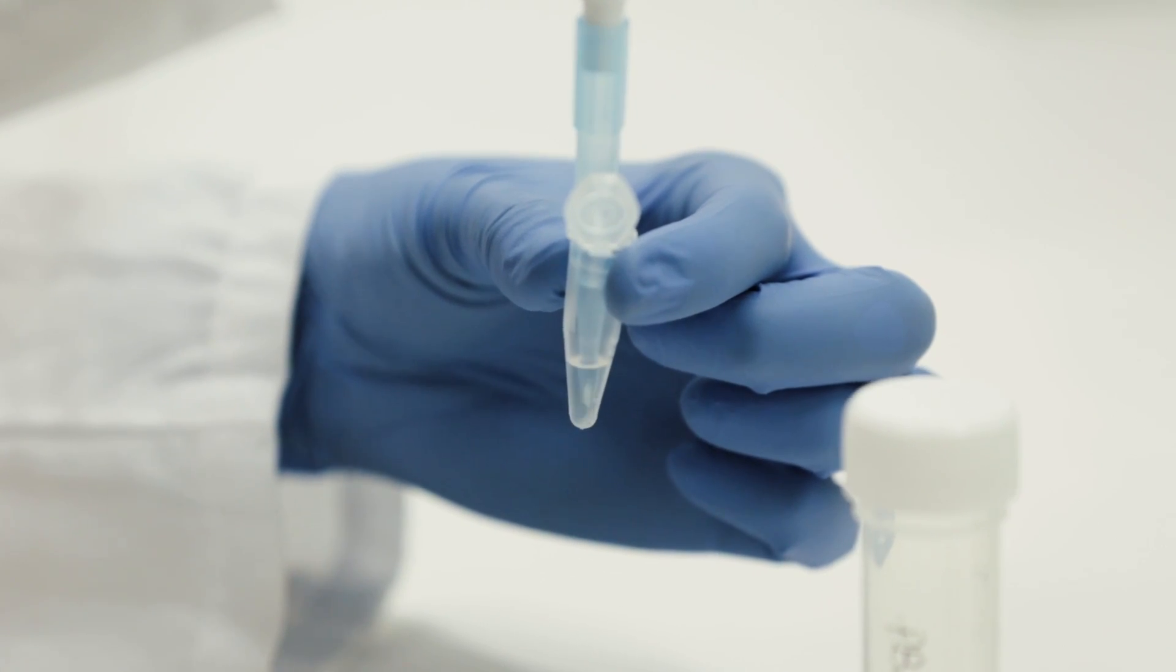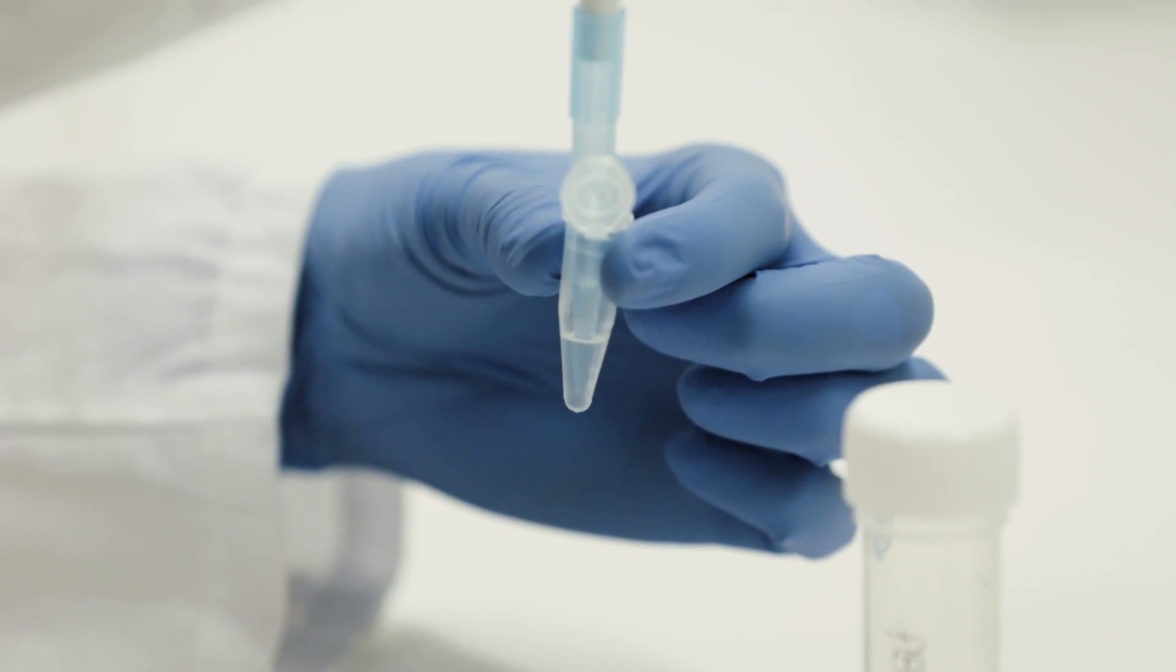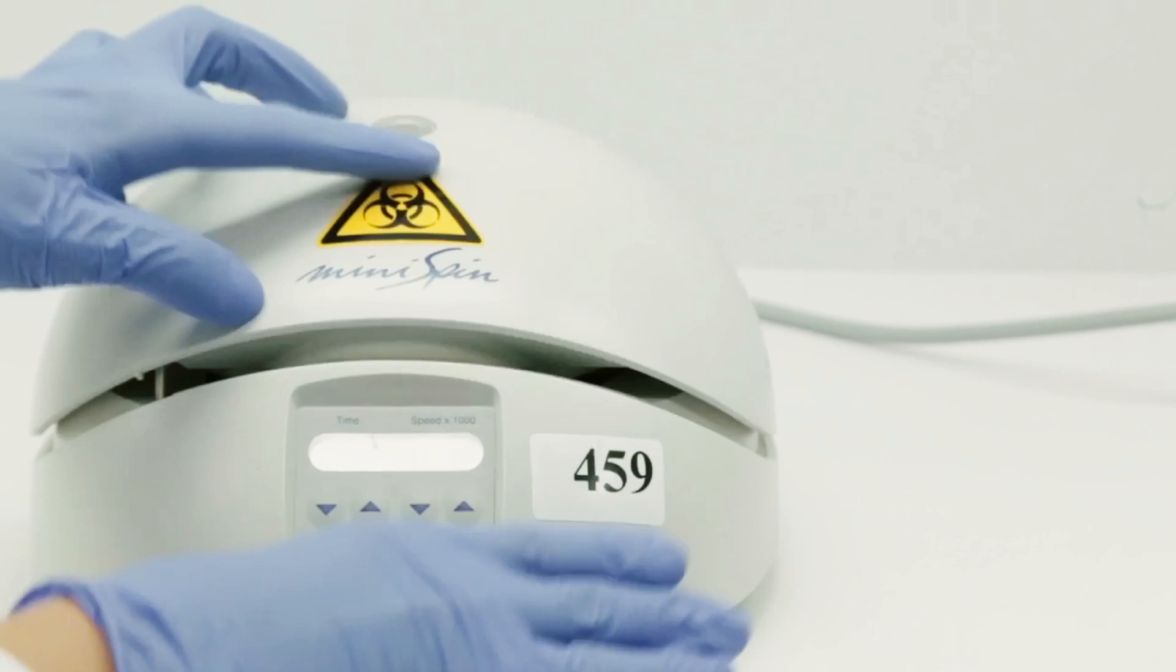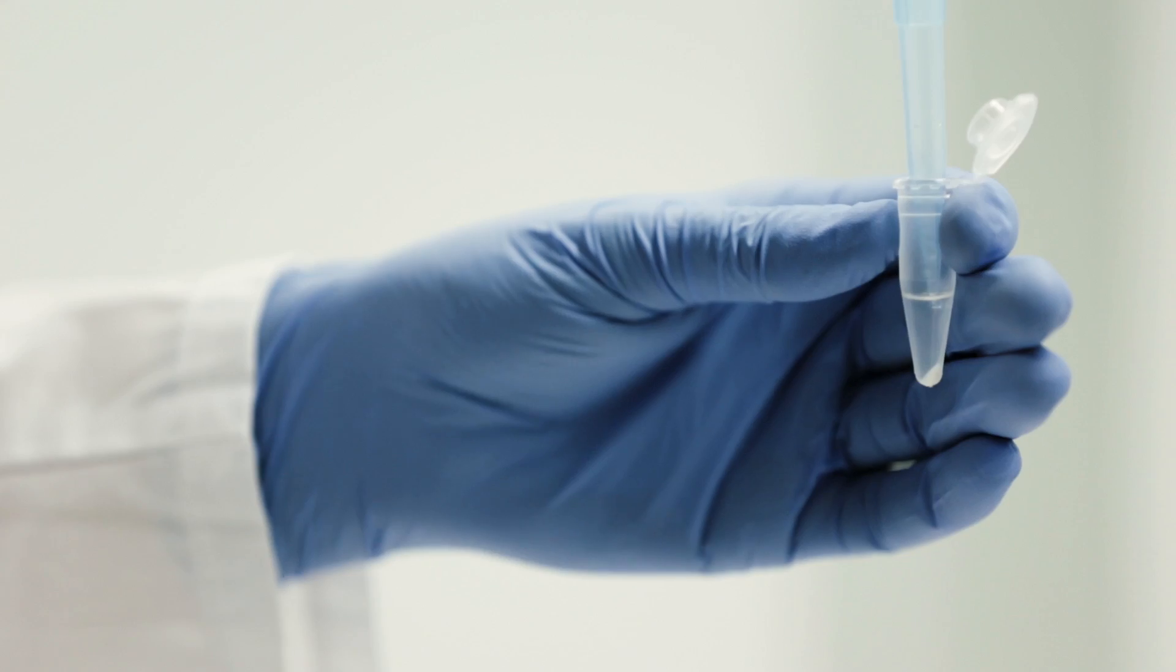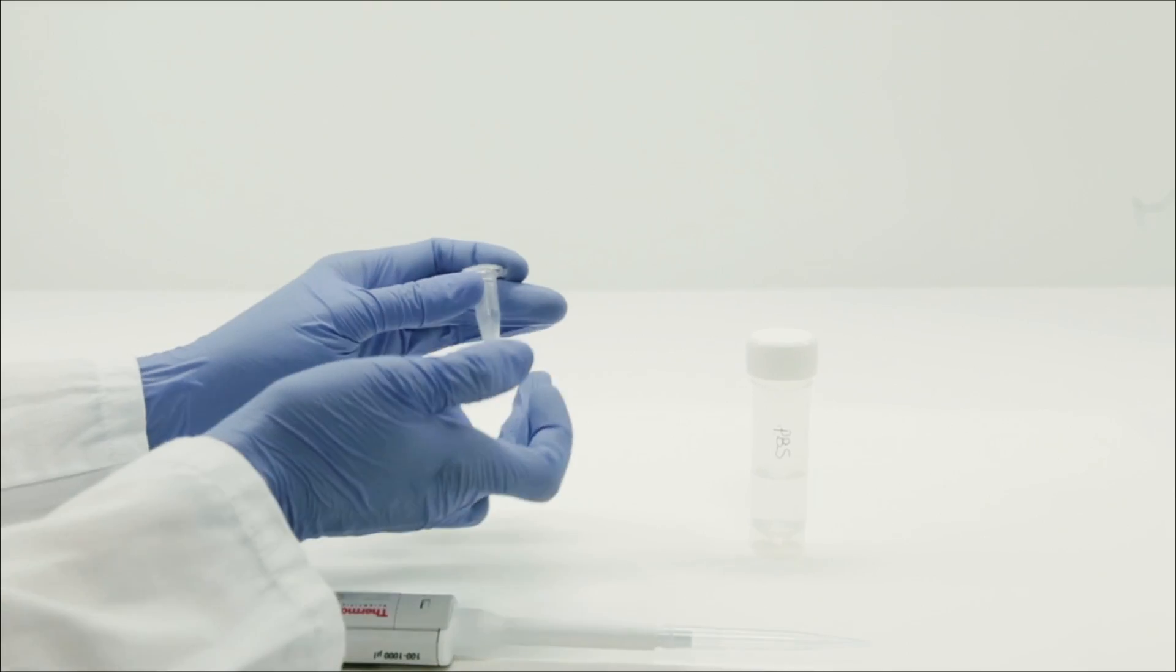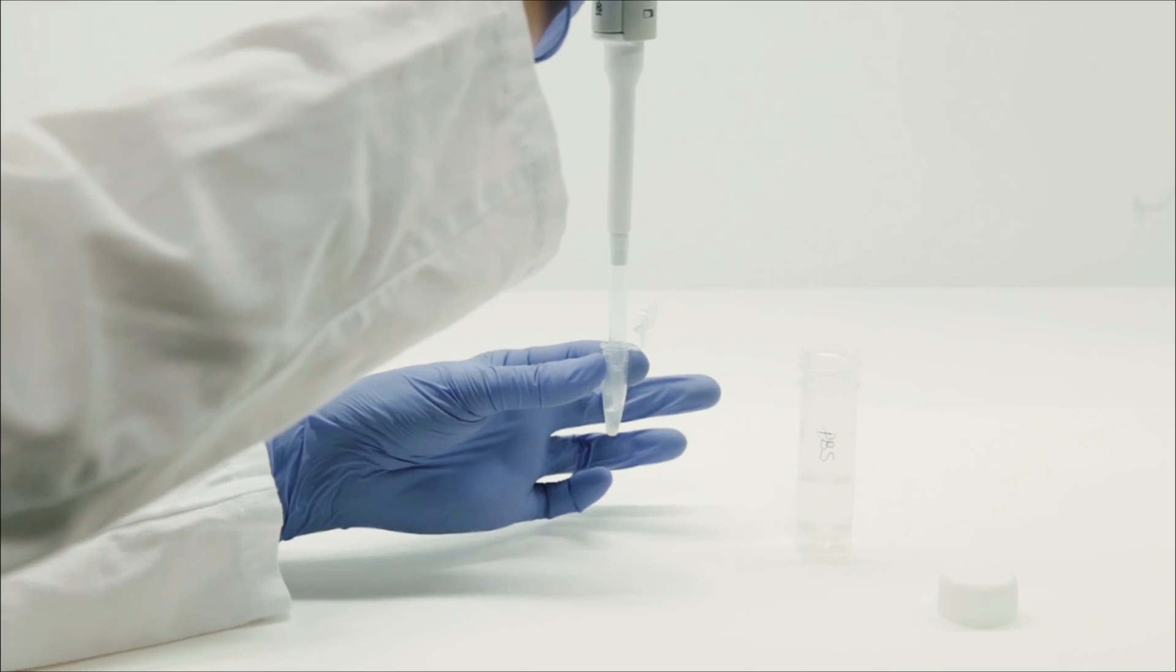Repeat the centrifugation step. Remove the supernatant, tap the tube, and add enough PBS to obtain an opalescent cell suspension.